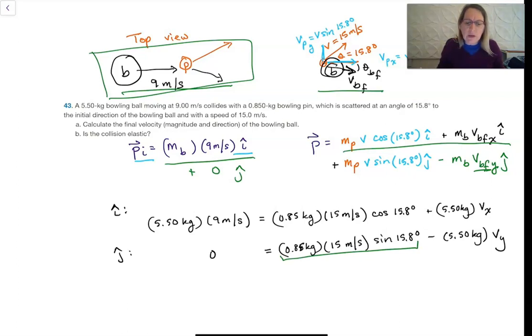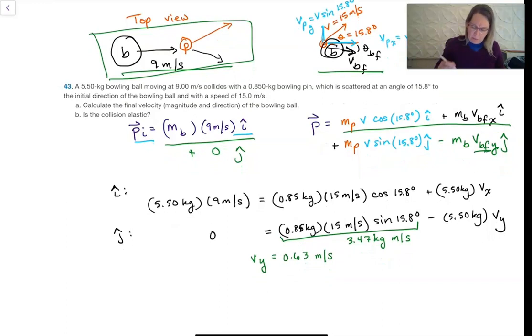Now I just need numbers for all of that. So all of this together, when I calculate it, I get that equals 3.47 kilogram meters per second. So I get a Vy for the ball of 0.63 meters per second. For this one, with the cosine, I get 12.3 kilogram meters per second. I get that this is 49.5 kilogram meters per second. I subtract 12.3 from 49.5 and then divide that, and I get Vx equals 6.77 meters per second. So those are my final speeds.